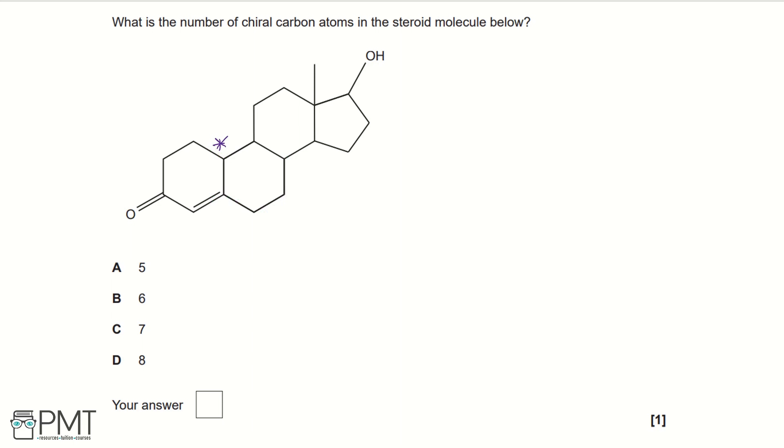Moving across, we have another chiral carbon here on our steroid molecule. Again, we have four different functional groups attached to this carbon atom.